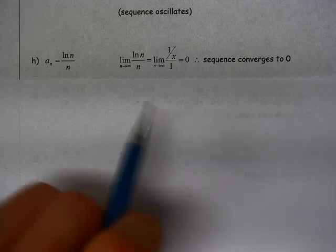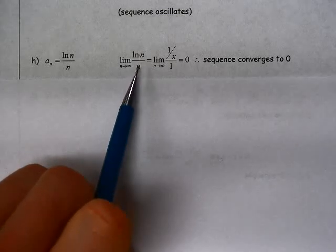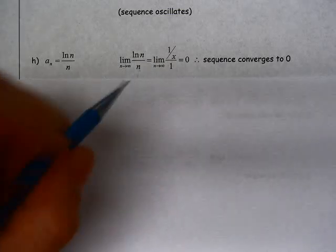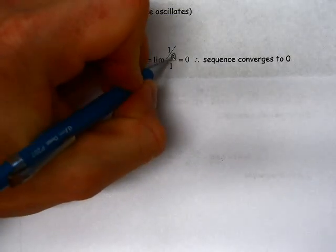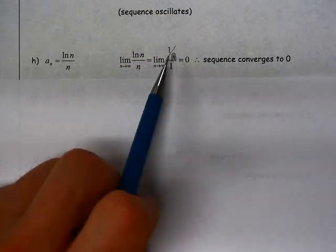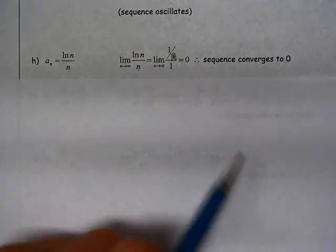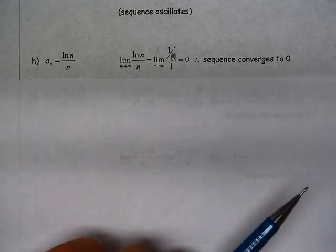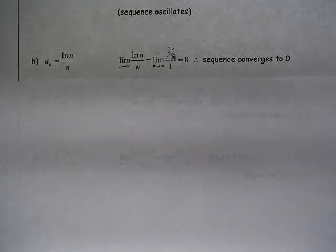We look at this sequence. It's defined as ln of n over n, and here I would get infinity over infinity if I use direct substitution. So instead, I'm going to use L'Hopital's rule. So this should be not an x, but an n, 1 over n, and the derivative of n is 1. So I have 1 over n over 1, and as n approaches infinity, I would get a 0 for my numerator. So this sequence converges to 0 using L'Hopital's rule.